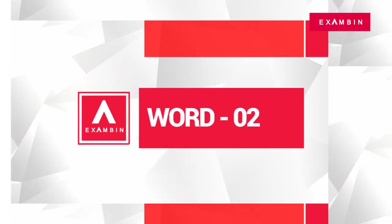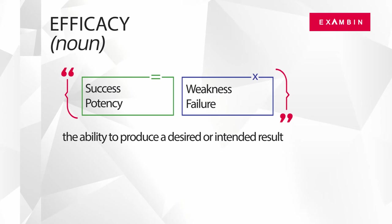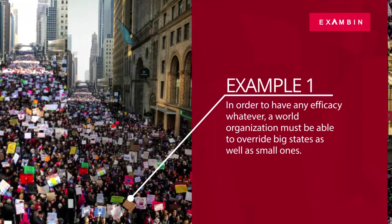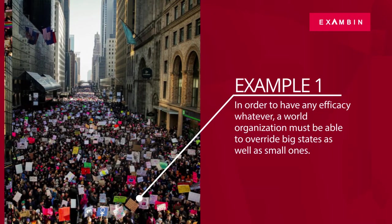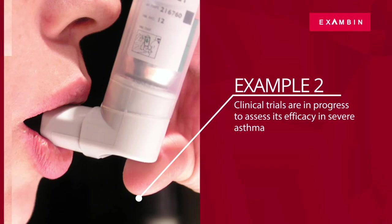The second word of the day is 'efficacy.' Efficacy is a noun. The direct synonyms of efficacy are 'success' and 'potency.' In general context, efficacy means the ability to produce a desired or intended result. 'Weakness' and 'failure' are some terms referring to the opposite meaning. Example: 'In order to have any efficacy whatever, a world organization must be able to overwrite big states as well as small ones.' Another example: 'Clinical trials are in progress to assess its efficacy in severe asthma.'